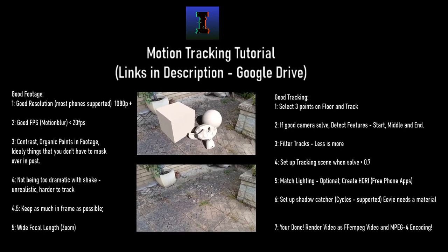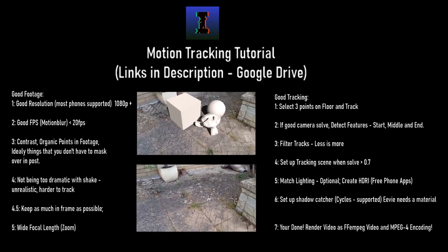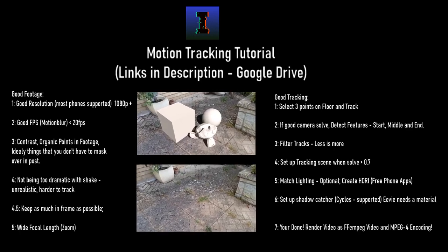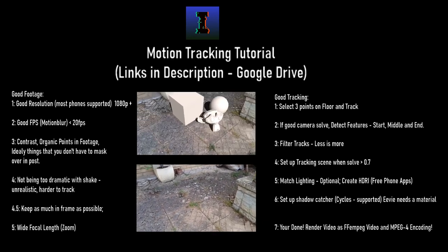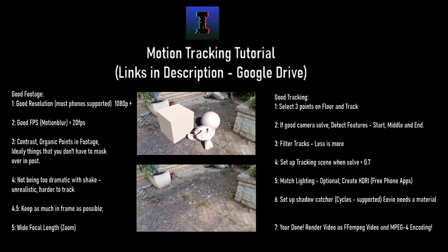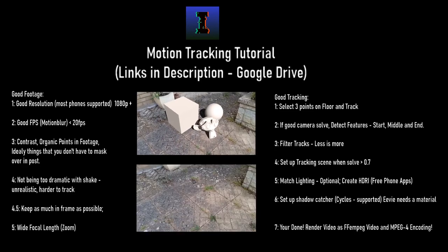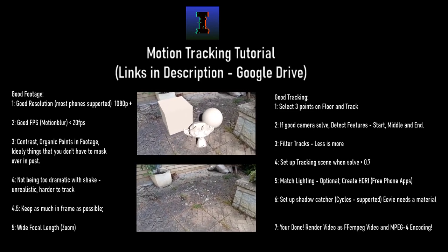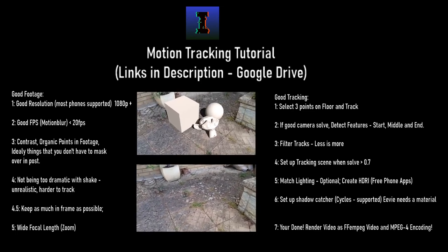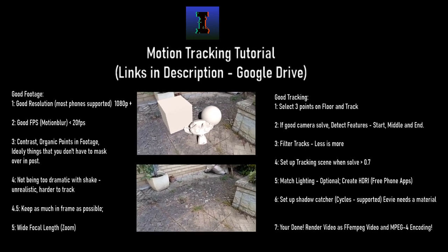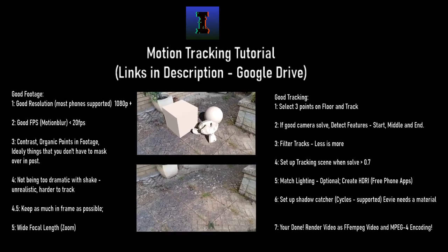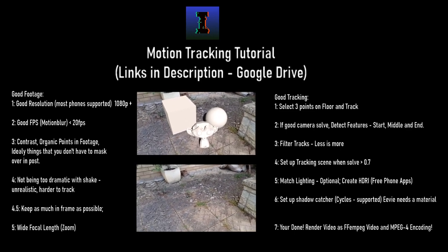For a good camera solve, detect features at the start, middle and end. Detect features is where Blender automatically finds good contrasting organic points in your scene and tracks them. You detect features at the start, middle and end, and you track forwards and backwards. You probably don't know what I mean yet because I haven't shown you, but we'll get to that.